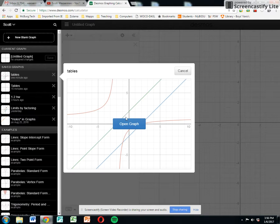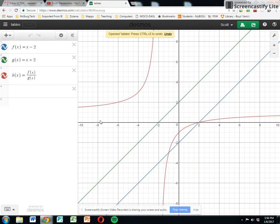So I'm going to open one that I call tables, and I'm just going to say open graph for a moment here. So what we've done here is we've created an f of x, a g of x, and an h of x, which is a rational function involving the function f of x divided by g of x.